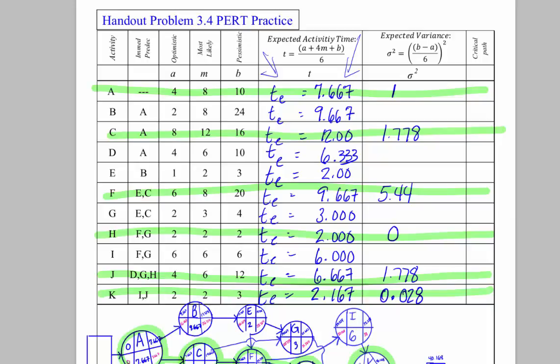So I have the expected time for all of the different activities. And then over here I've computed the variance, and I just computed the variance for the activities that I knew were going to be on the critical path. So I first calculated this column here, then I went down here and I drew my diagram. That was step two. And then I computed it all out. Then I did this. So this was step three, computing the variances because I didn't need the variances for the activities that were not on the critical path.